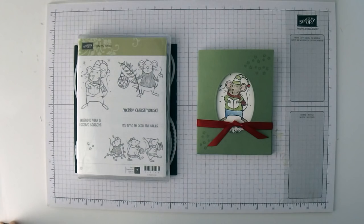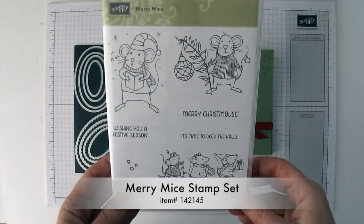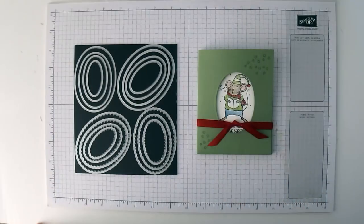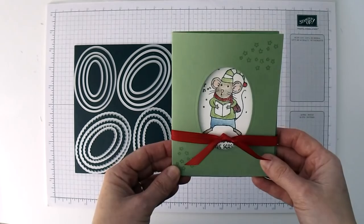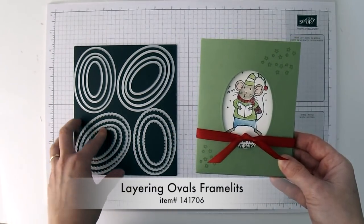Hi, I'm Brenda Quintana coming to you from the Beehive. On Monday I showed you how to make a set of cute note cards using this Merry Mice Stamp set, and the set had three note cards in it with matching envelopes. Today I'm going to show you how to make a note card holder that houses all of these note cards, and we're going to do that using the layering ovals framelits.